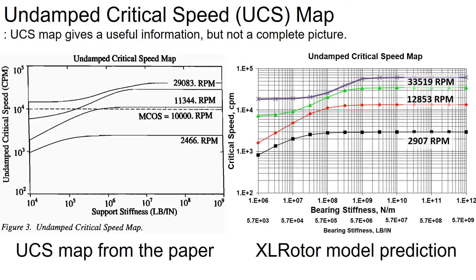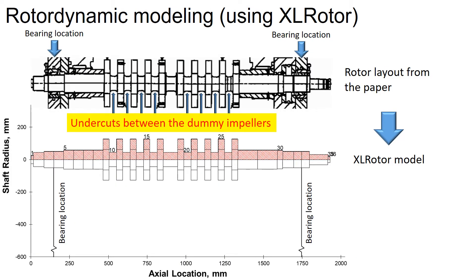This indicates that my modeled geometry resembles quite well with the model run by the DresserRand engineers in 1996. However, my model seemed to have higher critical speeds than the values in the paper, which indicates that my rotor is modeled slightly stiffer. This difference might be due to not accounting for the undercuts in between the dummy impellers. These undercuts make the rotor more flexible and reduce the critical speeds.